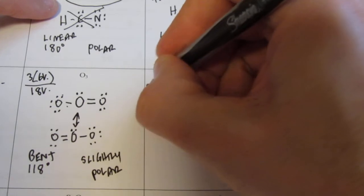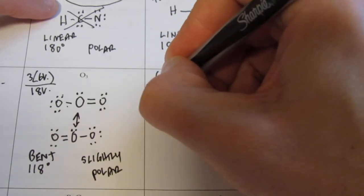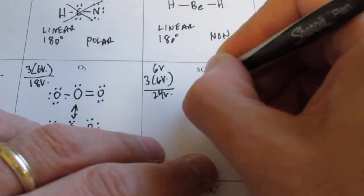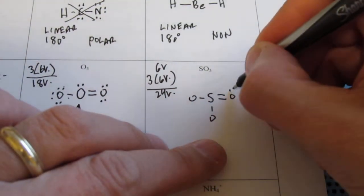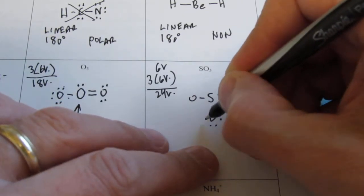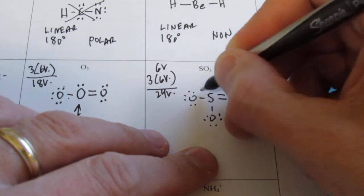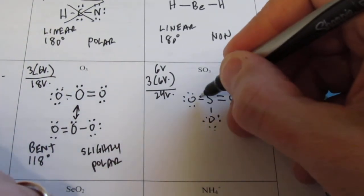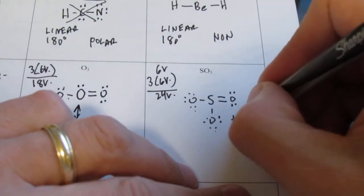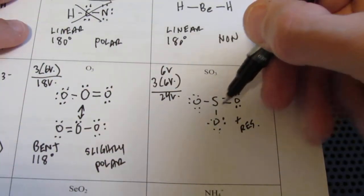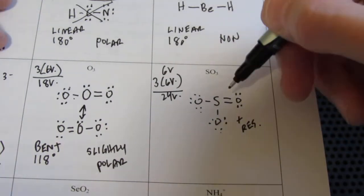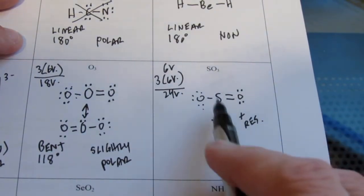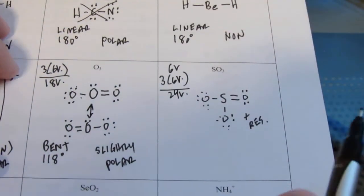SO3. Sulfur has 6 valence, each oxygen has 6 valence, so we have 24 valence. I happen to know there's a double bond and 2 singles. That means that oxygen needs 2 more pairs, this oxygen needs 3 more pairs, and so does this one. That sulfur is okay because it has 4 pairs around it with a double bond and 2 singles. 2, 4, 6, 8, 10, 12, 14, 16, 18, 20, 22, 24. I'm going to put plus RES — that means plus resonance, meaning that double bond could also be in the other positions. It's shared in all 3 positions, so in reality it's a bond and a third to each oxygen.